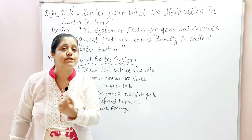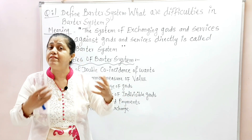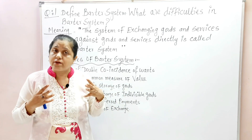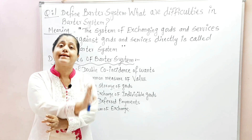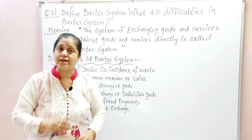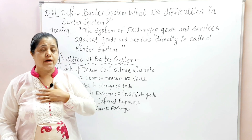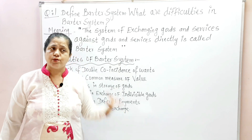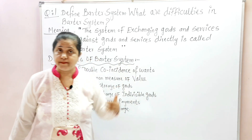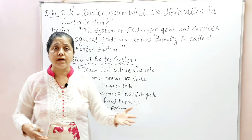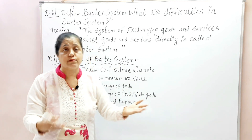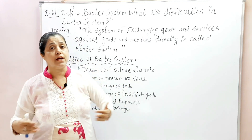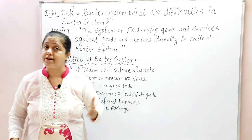How to acquire indivisible goods, and if we decided to purchase them, how much commodity or services should be paid in exchange? Suppose a carpenter wants to purchase goats or a cow — how many services should the carpenter provide? Or a weaver making cloth — how much cloth should he weave for the exchange? Planning for indivisible goods was again a big issue during the barter system.